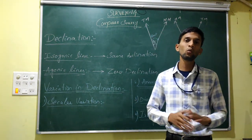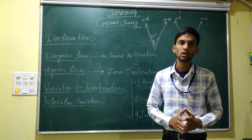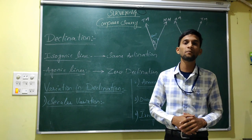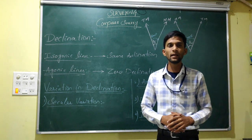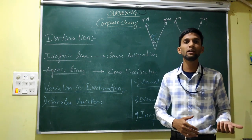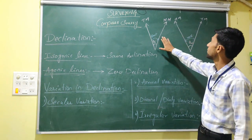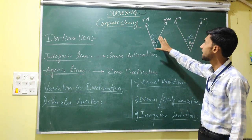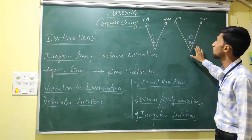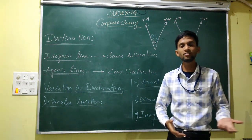What is Declination? The true meridian and magnetic meridian will never coincide, except in some few cases. Declination is the horizontal angle subtended between the true meridian and the magnetic meridian. It is called declination. It will either be east declination or west declination, depending on whether the magnetic meridian is to the east or west of the true meridian.